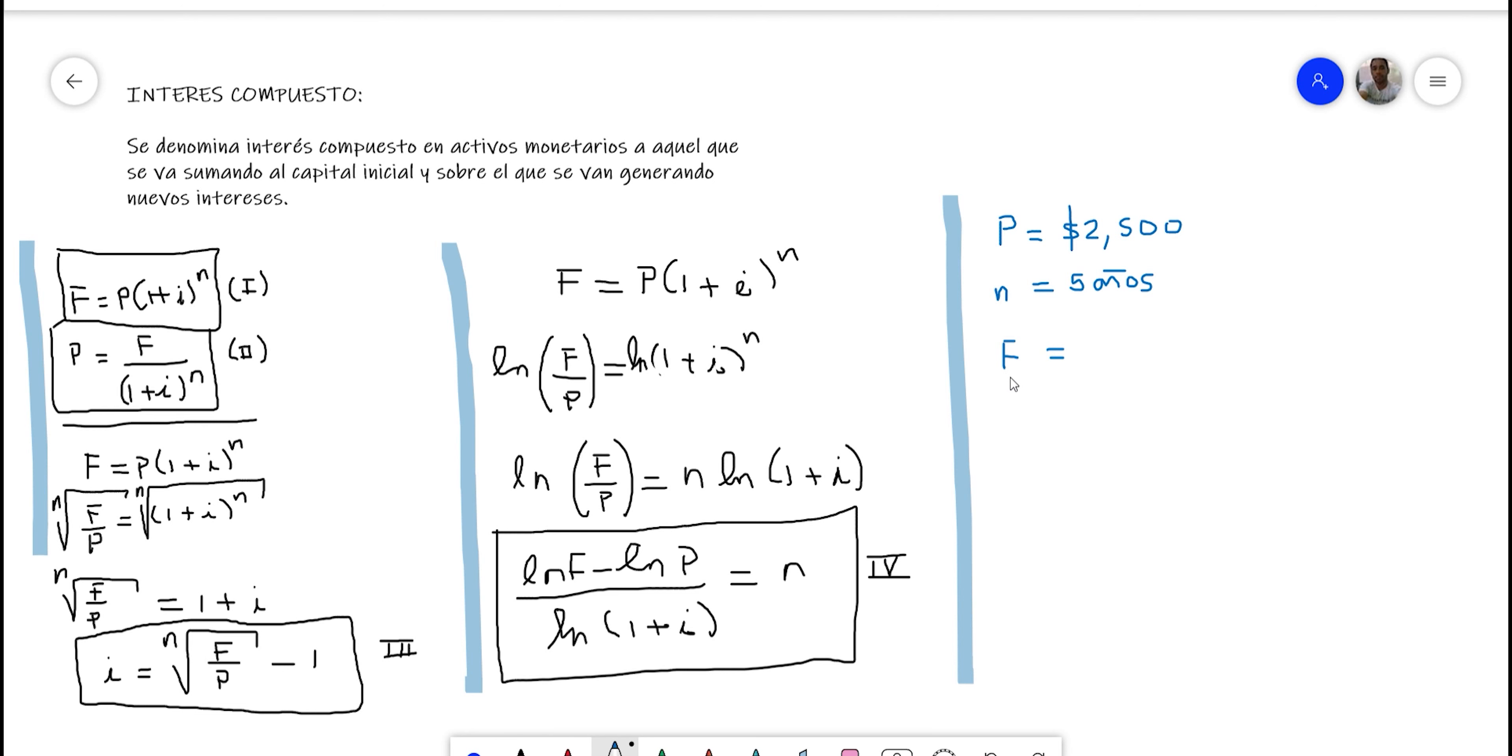At the end I made a payment of $3,700. And they ask, how much was the interest? How much was the interest rate that I applied to this operation? So we have three data. If you look, they are asking for the interest. What formula would we use?